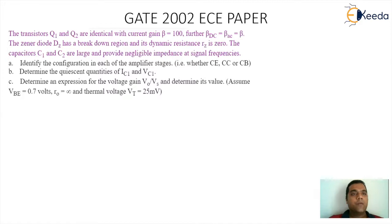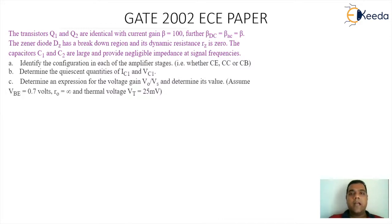Let's take the first question. This is from the Gate 2002 EC paper. The question is: the transistors Q1 and Q2 are identical with current gain beta equal to 100. Beta DC is equal to beta AC is equal to beta. The Zener diode DZ has a breakdown region and its dynamic resistance RZ is zero. The capacitors C1 and C2 are large and provide negligible impedance at signal frequency.